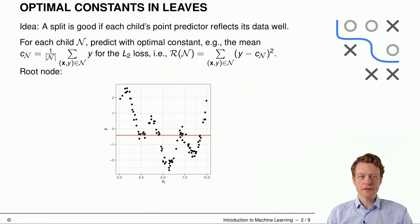What is an optimal constant in a leaf? So the idea here is that the split is good if each child's point predictor reflects its data well. So what does it mean for a point predictor to reflect its data well? For each child we predict in that child node with an optimal constant. And this optimal constant may for example be the mean value, so just the mean of the y values, if we choose the L2 loss.